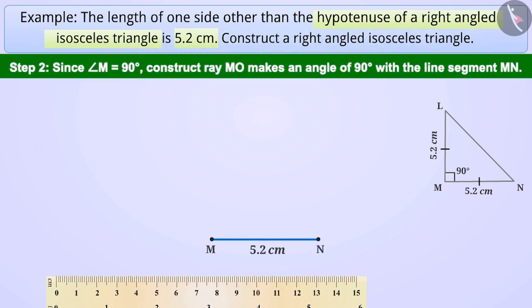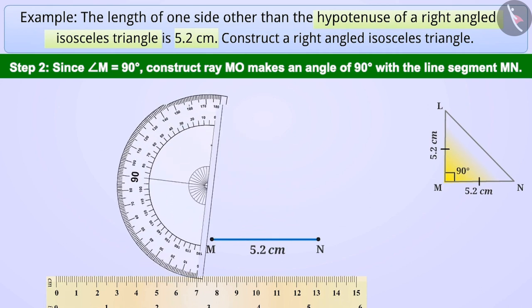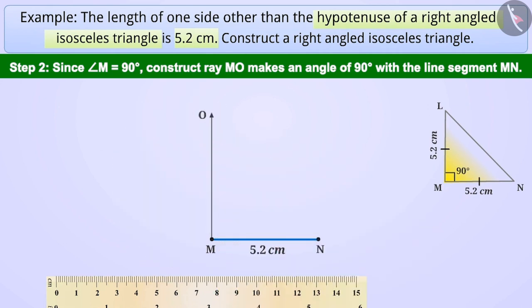Step 2. As we know, angle M measures 90 degree. We will draw the ray MO. The ray MO forms an angle of 90 degree with the line segment MN.